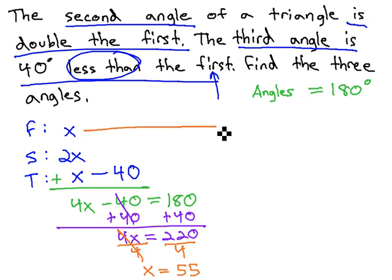x represents the first angle, 55 degrees. The second angle is 2x, or 2 times 55. 2 times 55 is 110 degrees. The second angle is 110 degrees.